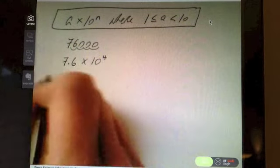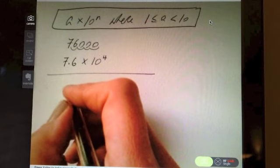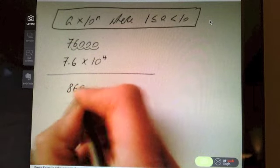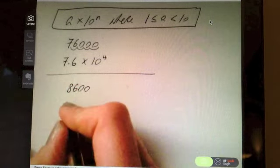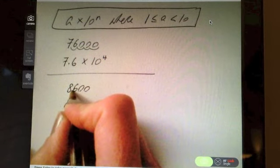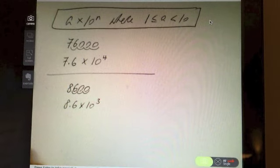So, try the following question. Pause the video and see if you can get it yourself. Let's try 8,600. And so, again, you'd need the decimal point in between the 8 and the 6. And then you would be multiplying by 10 to the power of 3.